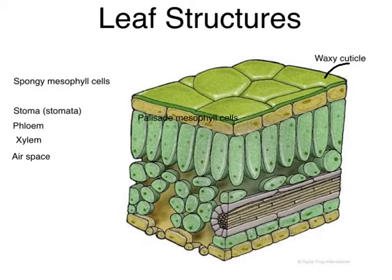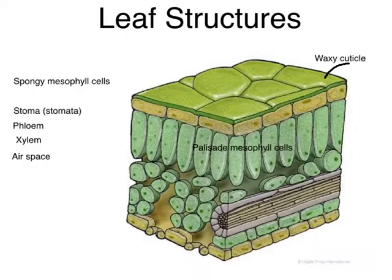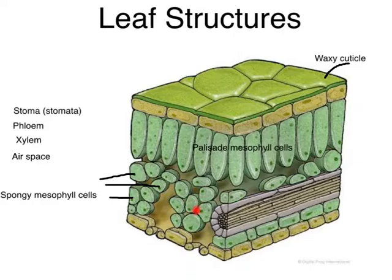Next on our list are the palisade mesophyll cells. These guys here that kind of look like columns are the palisade mesophyll cells. Mesophyll cells, in general, are cells where the vast majority of photosynthesis takes place, and there are two types. There's the palisade mesophyll cells, as shown here, and there's the spongy mesophyll cells, which are spread throughout the leaf. Those are the primary locations of photosynthesis.